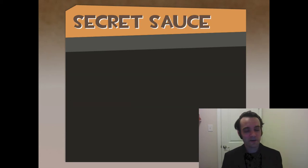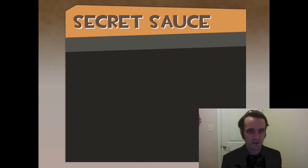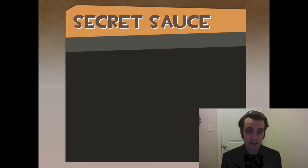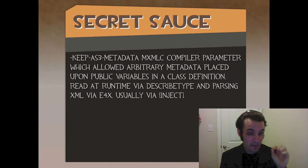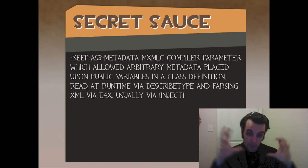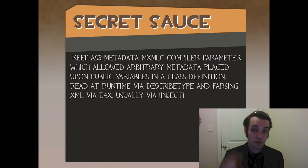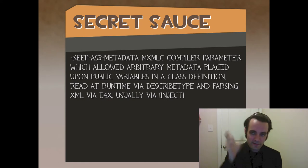The secret sauce of Swift Suspenders — what really drove the core of the Flash application framework with stage-added events, display objects being added, auto-mediation — was the keep-AS3-metadata mxmlc compiler flag parameter. This allowed arbitrary metadata placed on public variables in a class definition to be read at runtime via the describeType function. You could take that XML out and parse it via E4X — ECMAScript for XML — usually via the inject tag.